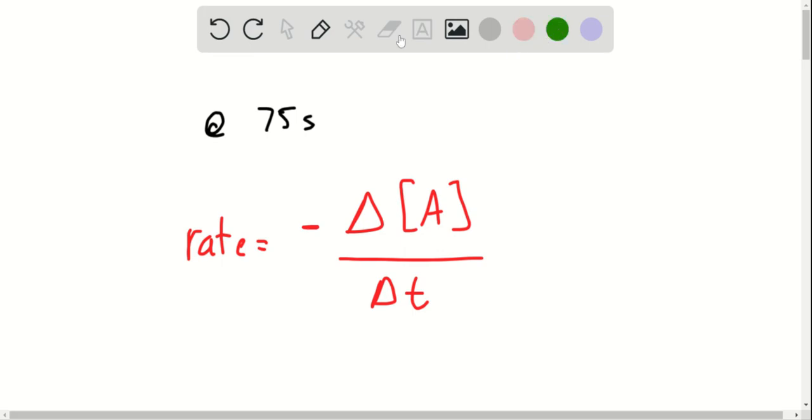To figure it out at 75 seconds, we're going to use the two data points around 75 seconds to get an average. So we're going to use the data point at 50 seconds and the one at 100 seconds.